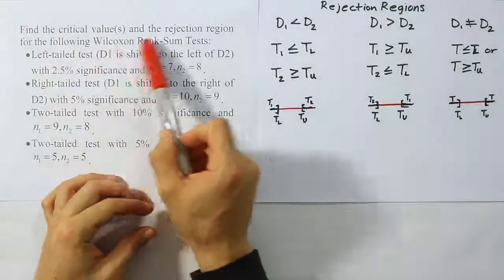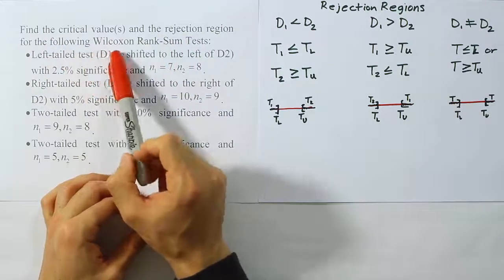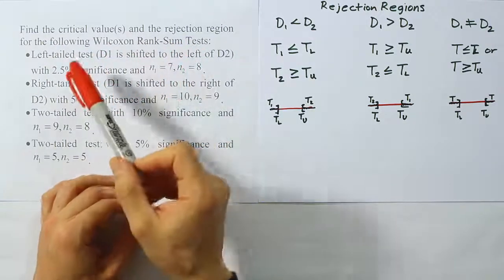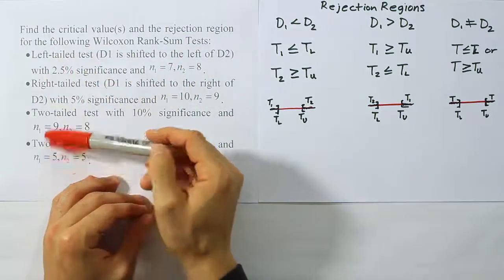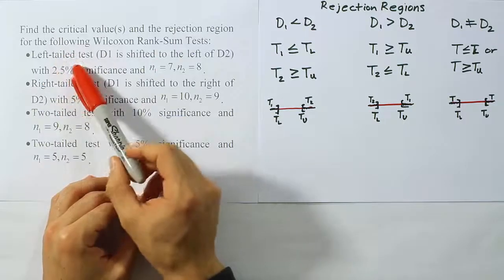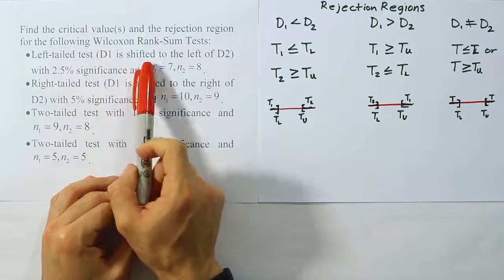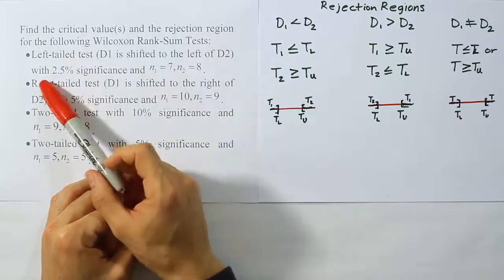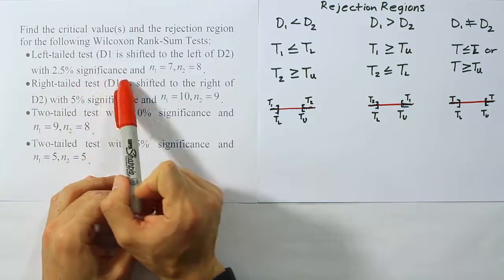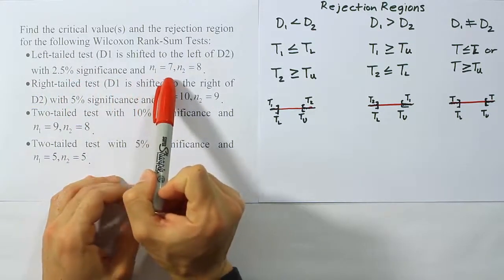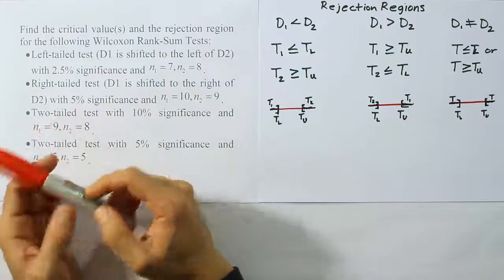Find the critical values and the rejection region for the following Wilcoxon rank sum tests. We have four cases to look at. The first one says a left-tailed test, so D1 is shifted to the left of D2, with a 2.5% significance level, and N1 equals 7, N2 equals 8.